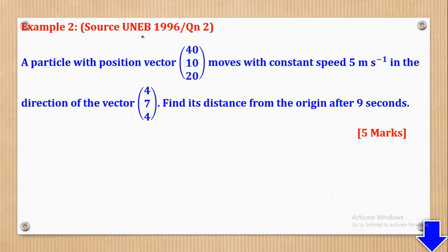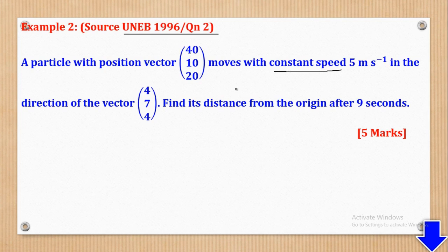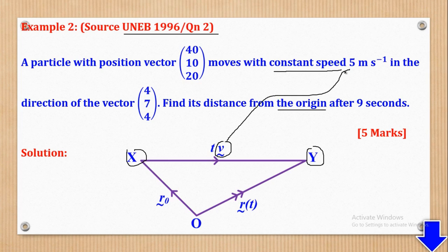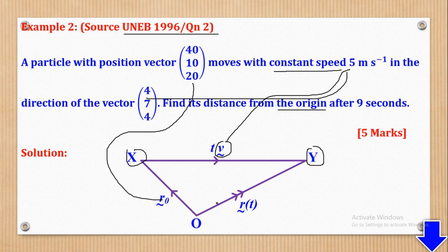Now we go to Example 2, which came from UNEB 1996, paper 2, question 2. It says: a particle with position vector (40, 10, 20) moves with constant speed of 5 meters per second in the direction of the vector (4, 7, 4). Find its distance from the origin after 9 seconds. The first thing to do is draw our triangle showing how the motion goes — starting from X and ending at Y. We know the magnitude and direction but not the velocity vector, and R0 is the initial position vector.